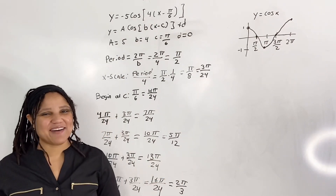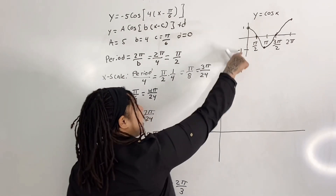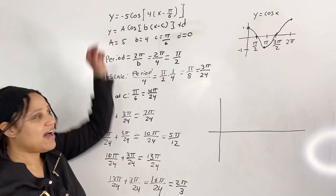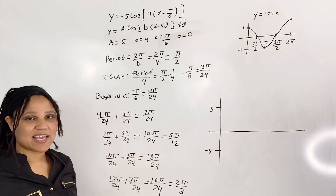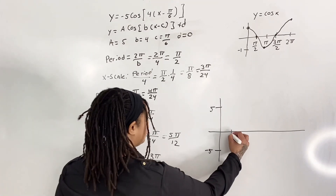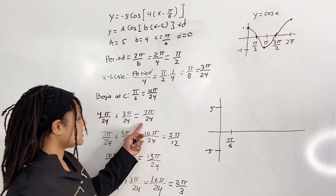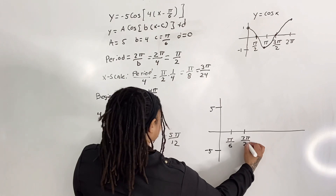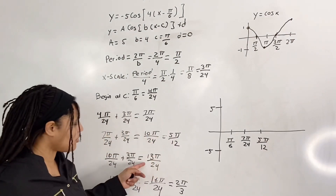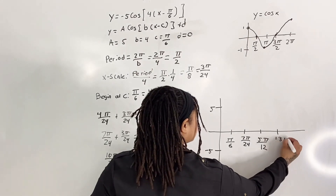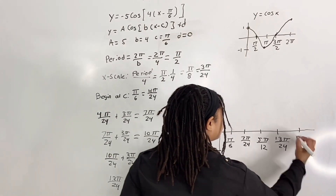Now we are ready to graph the cosine function. This time our high and low will be 5 and negative 5 instead of 1 and negative 1. We label the x-axis starting at pi over 6, then 7 pi over 24, then 5 pi over 12, then 13 pi over 24, and ending at 2 pi over 3.